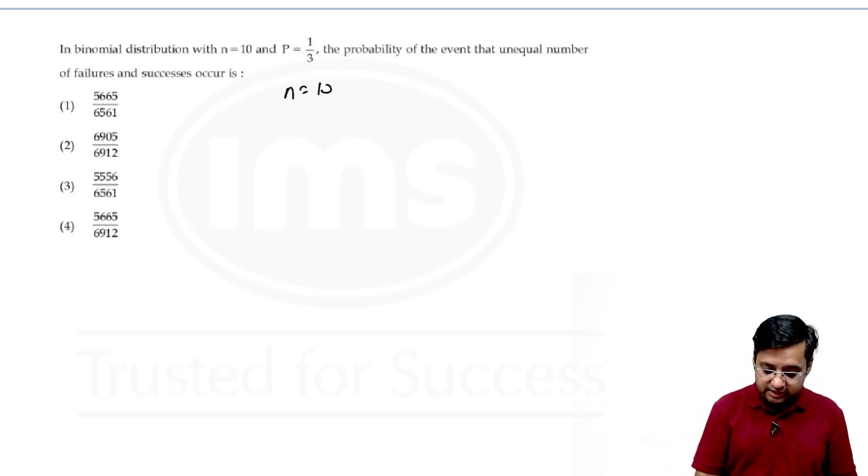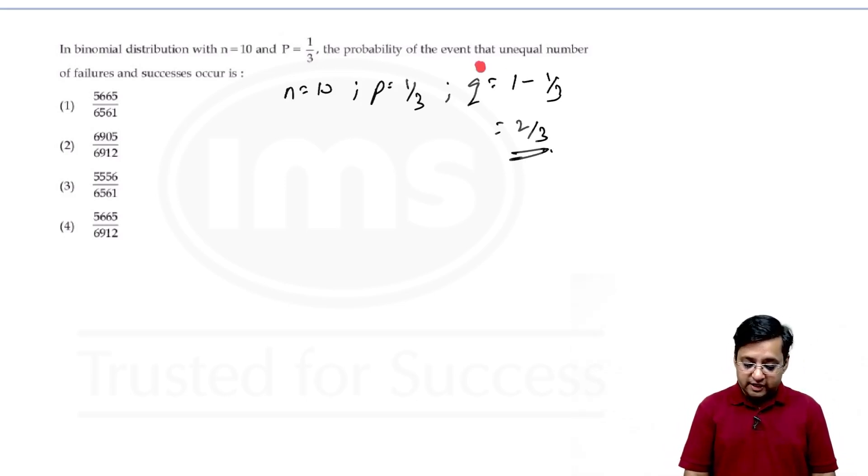Now we have n equals 10, p equals 1/3 which is success. We need to find the failure also, so it will be 1 minus 1/3 which is 2/3. Now we have to find an unequal number of failures and successes. It's a very tricky question and we cannot find unequal distributions because 10 can be separated in many other options like 6, 4, 7, 3, 8, 2. So the better way would be we just find the equal number of success and failures. Now what is the value equal in 10? Of course, 5 and 5.